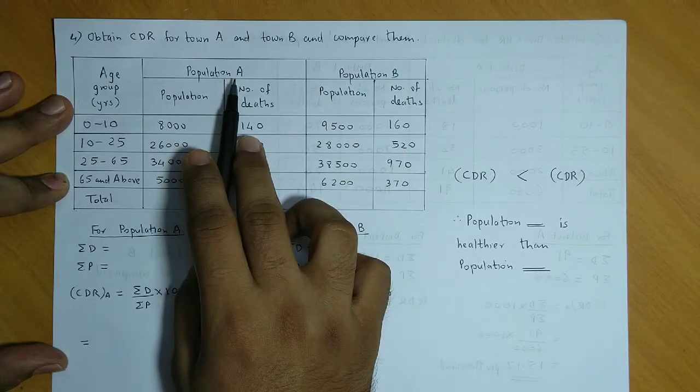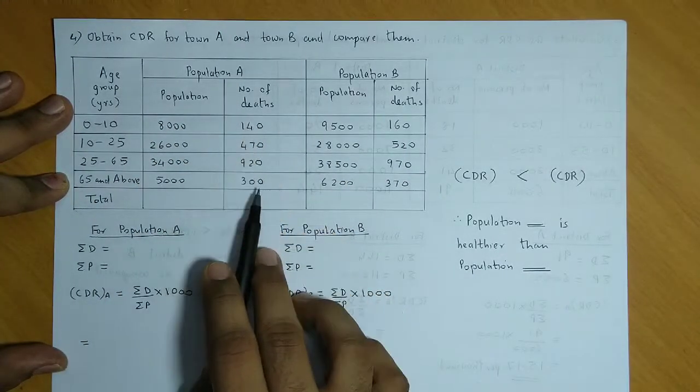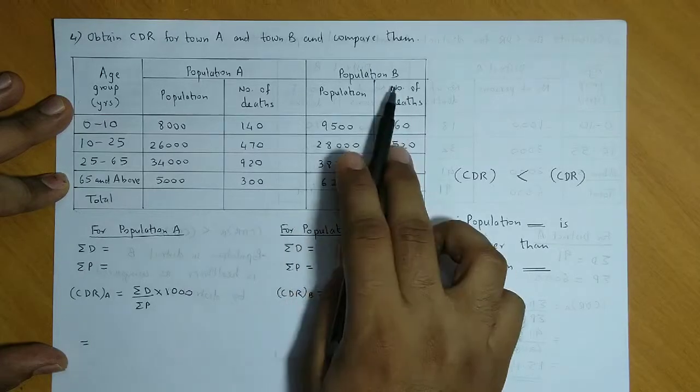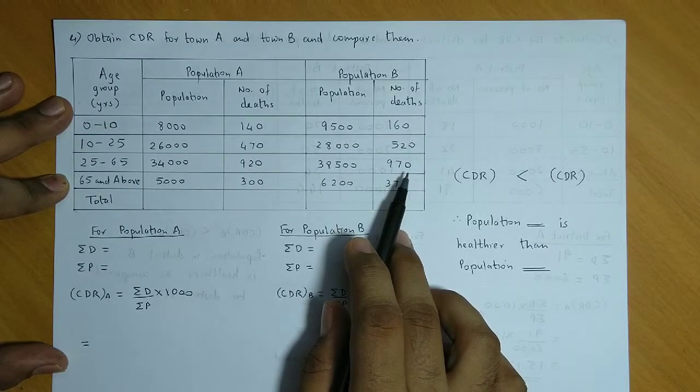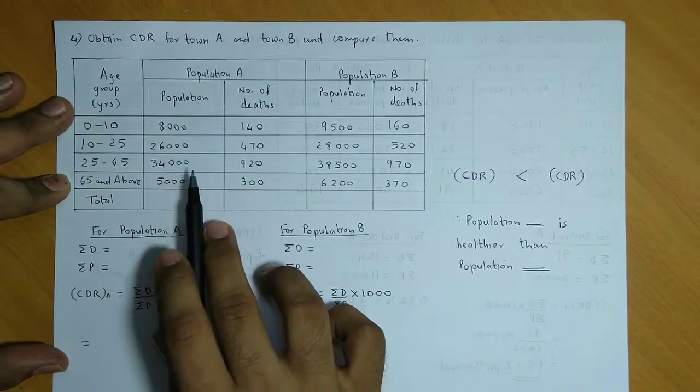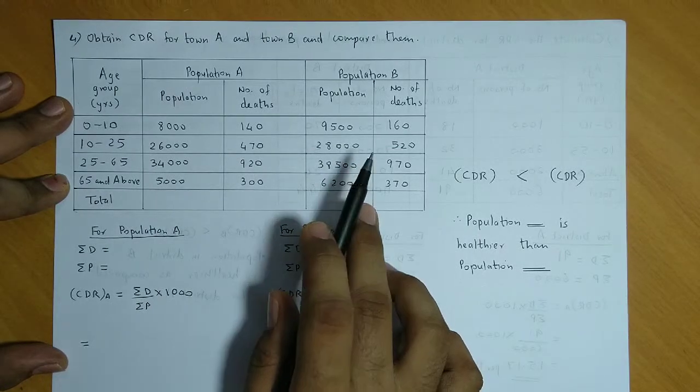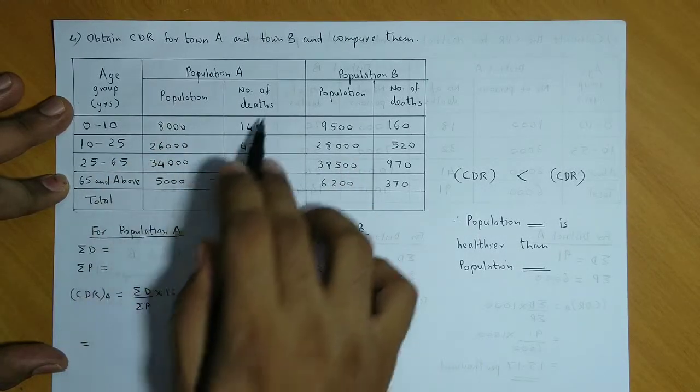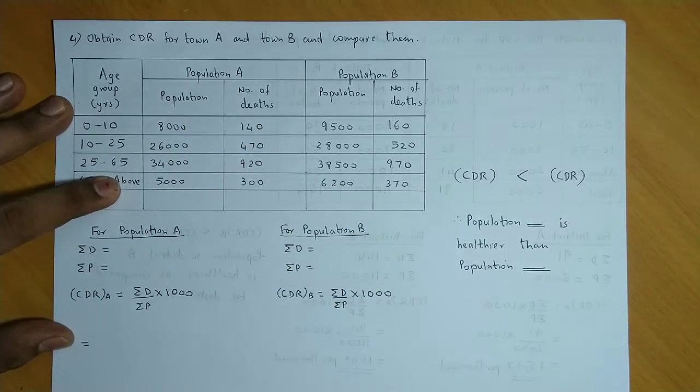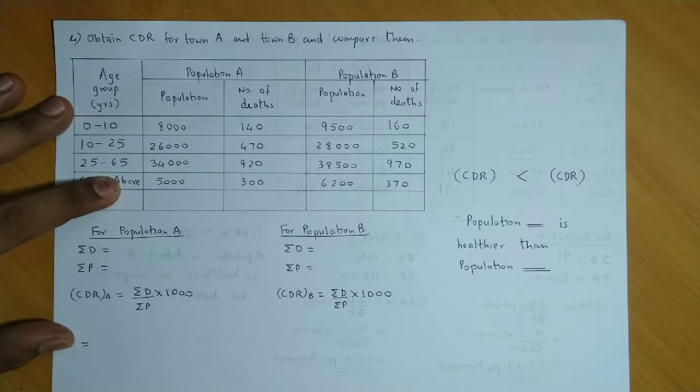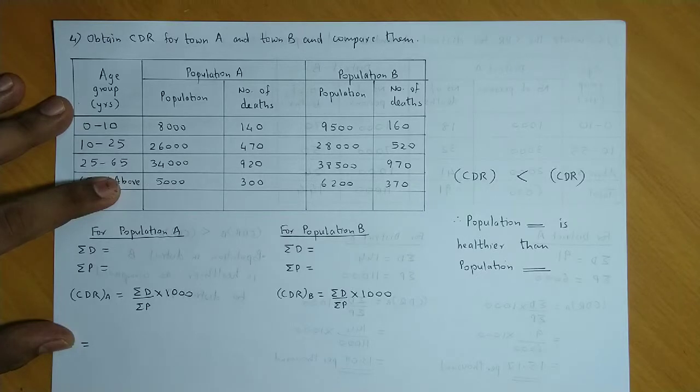Under population, actual population is given and number of deaths is given. So population is mentioned and deaths are mentioned. We find CDR, crude death rate for population A and population B. Now we have population and deaths total. So we have 8,000 plus 26,000 plus 34,000 plus 5,000.